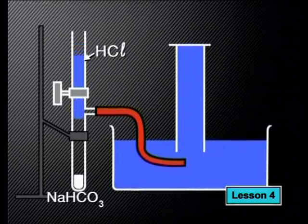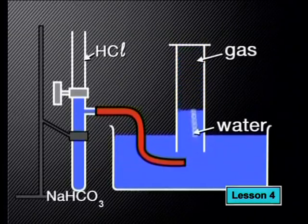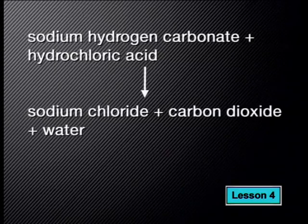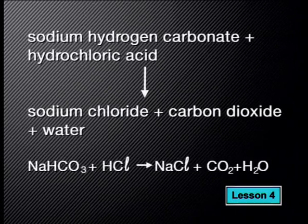Now it's time for us to do one more reaction with our bicarbonate of soda. This time we're going to add a volume of hydrochloric acid to a 1.68 gram sample of sodium bicarbonate and collect and measure the volume of gas produced. We need to write down the balanced chemical equation. When sodium hydrogen carbonate reacts with hydrochloric acid, it forms sodium chloride, carbon dioxide and water. The balanced chemical equation is: NaHCO₃ + HCl → NaCl + CO₂ + H₂O.